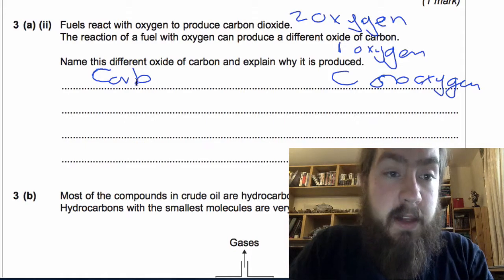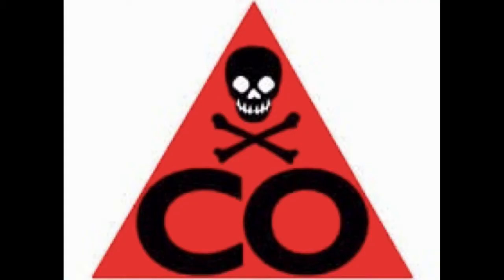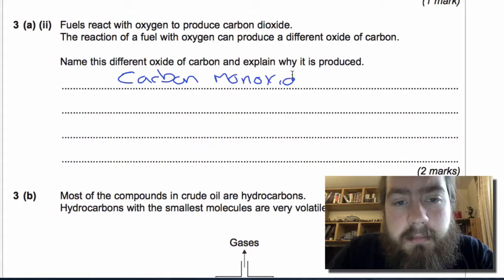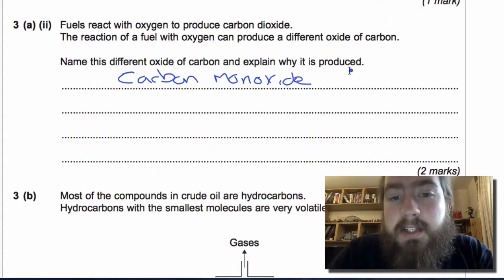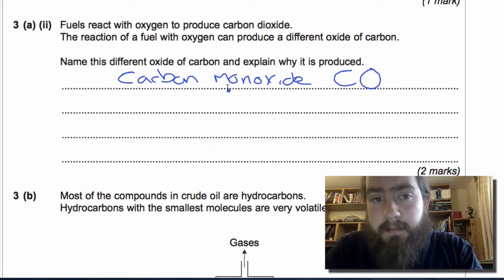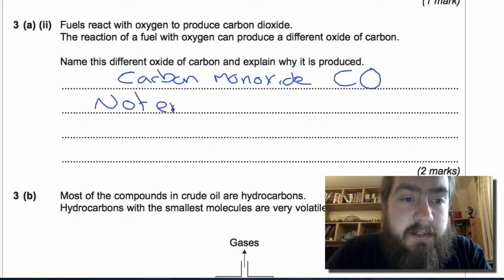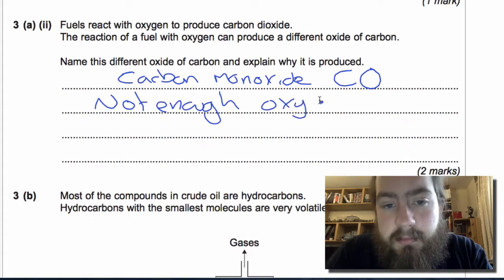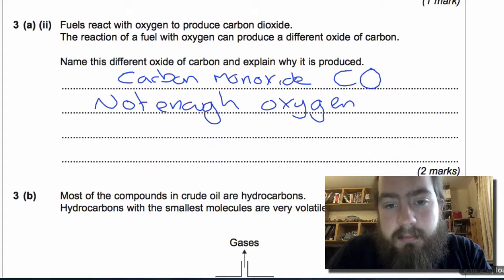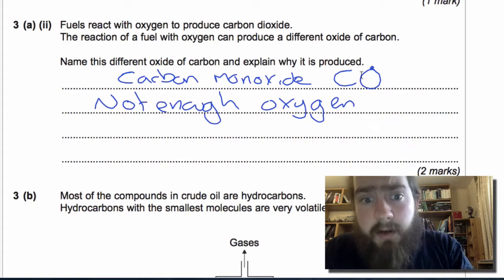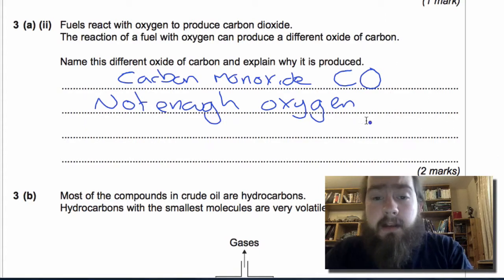So we're going to write in here carbon monoxide, which is capital C, capital O, no numbers, and it's produced because there's not enough oxygen. If there was more oxygen it would completely combust.